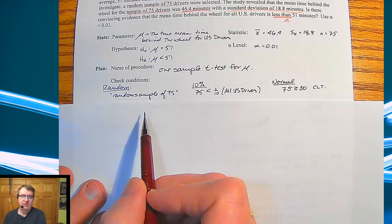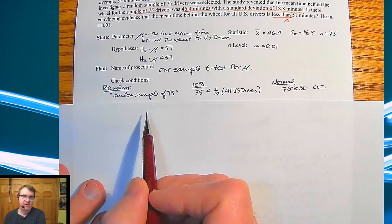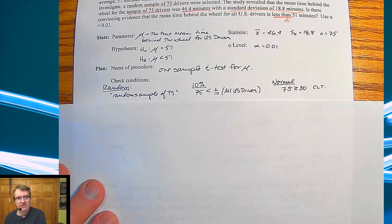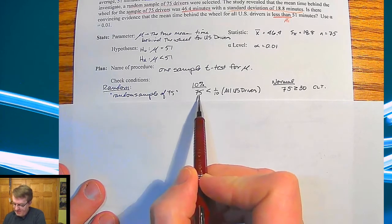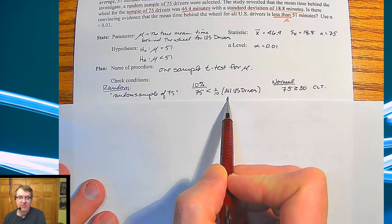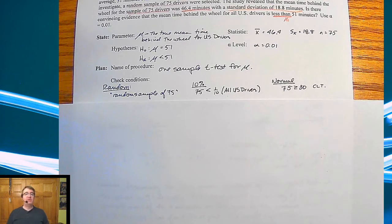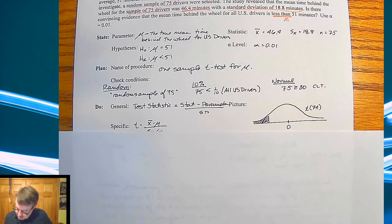And again, for two extra seconds of time, I think that's fine. If you need to practice writing so that your hand doesn't get tired, that wouldn't be bad either. 75 is definitely less than one-tenth of all U.S. drivers. And 75 is greater than 30, so we can use the central limit theorem so we don't have to worry about normality.